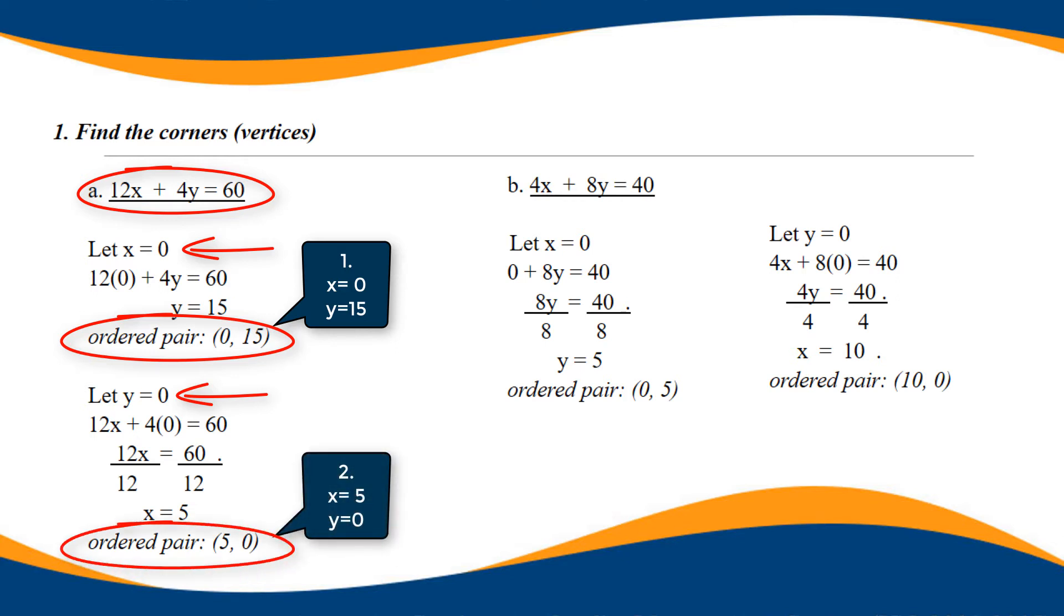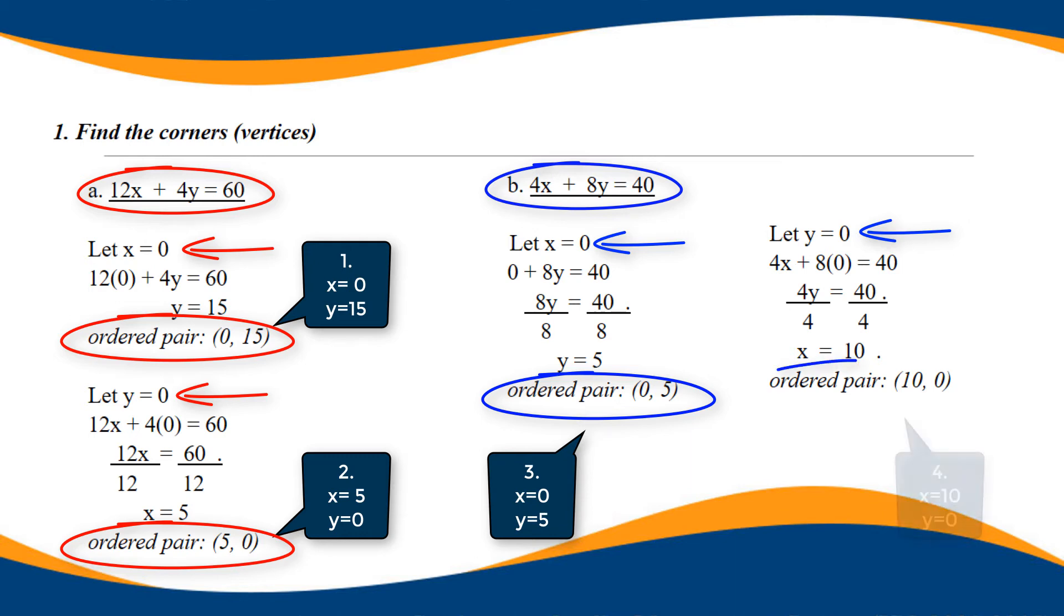On the second equation, 4X plus 8Y equals 40. Let X be equal to 0. We have 8Y equals 40, divided by 8, Y equals 5. Then we have the first ordered pair for this equation, 0, 5. The other one, let Y equal 0. 4X plus 0 equals 40, 4X equals 40, divided by 4, X equals 10. The ordered pair for this is 10, 0.